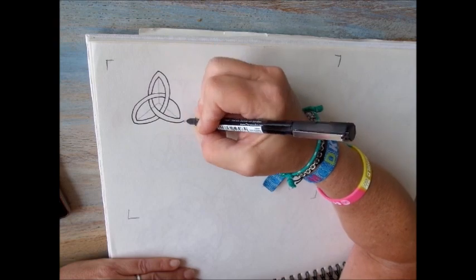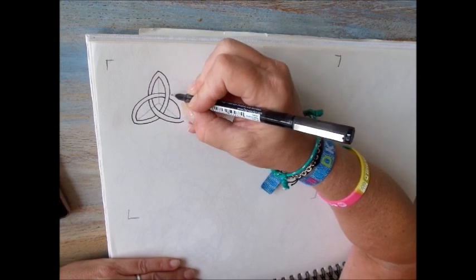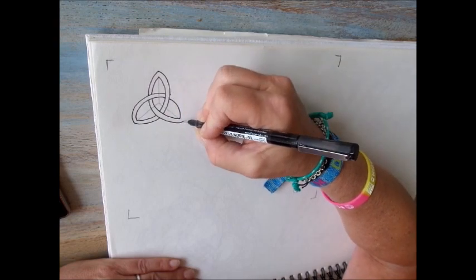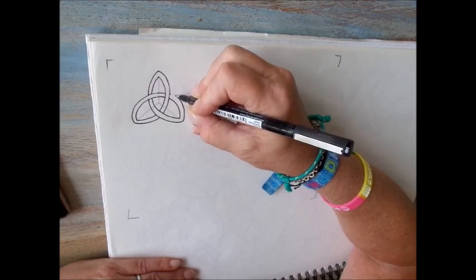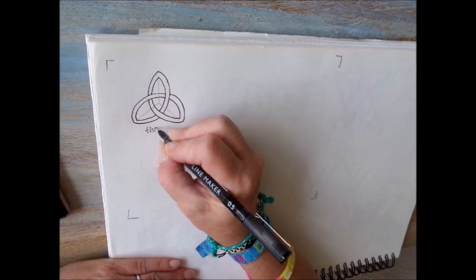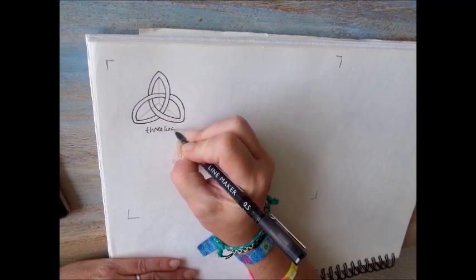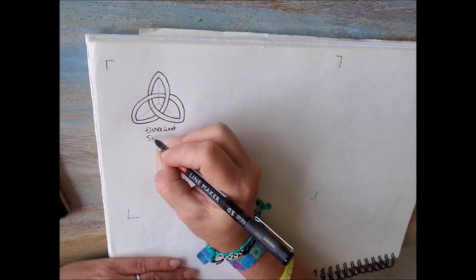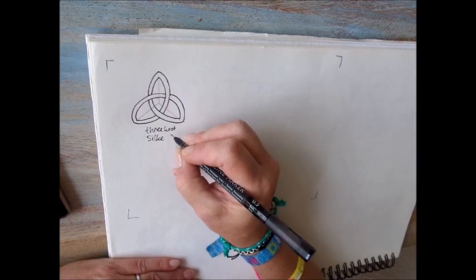So when you draw your line, be sure to look where you have to end. I have to end here. And there it is. Three knots by Silke Wagner.